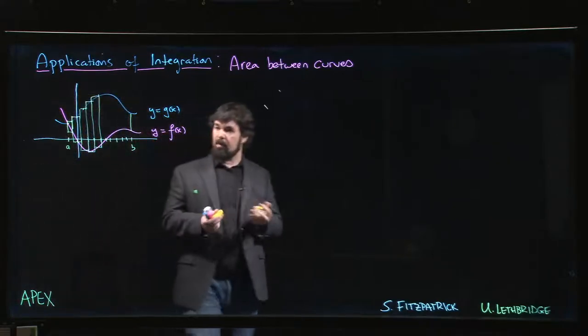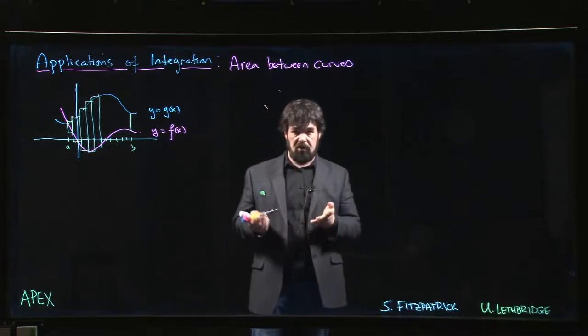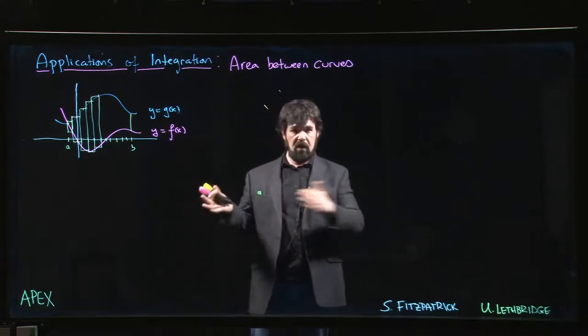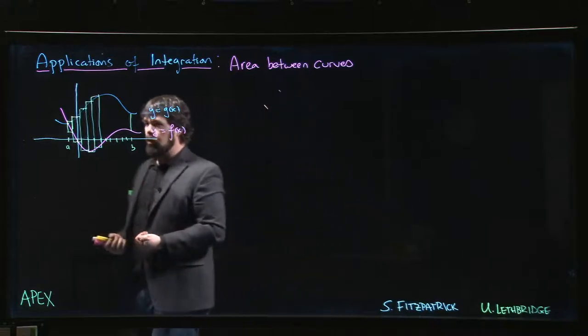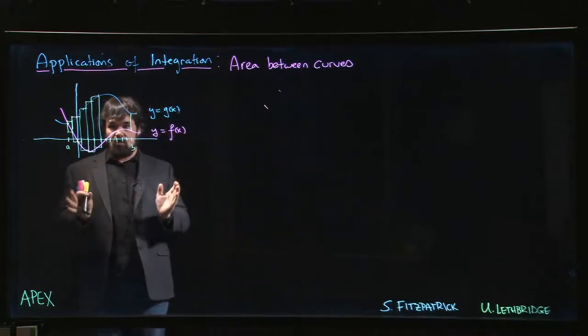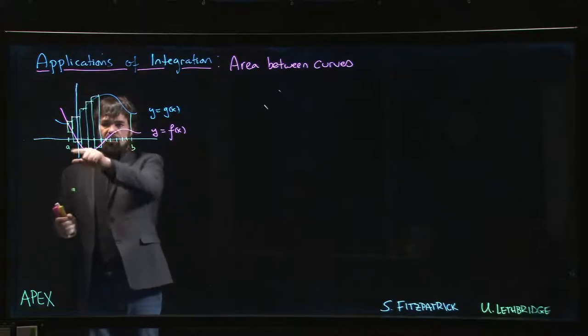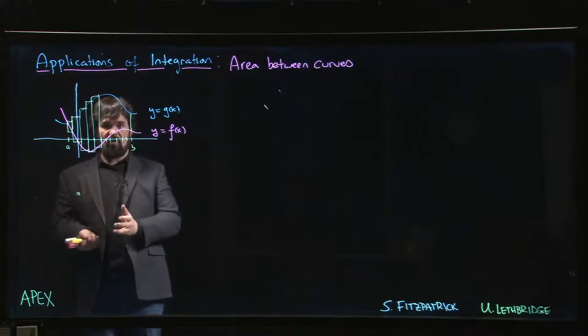The idea is that we should be able to get a pretty good approximation for the area between the two curves using these rectangles. Just like with Riemann sums, if you want to improve the approximation you should increase the number of rectangles, which means decreasing the width of each rectangle. We increase the number of partition points.